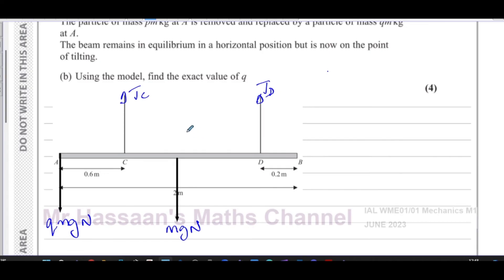Because there's been that change, the tension is no longer the same. You have here the tension in D and the tension in C. However, we know that it's on the point of tilting. So if you're adding a mass here, it's going to cause it to be tilting about C. If that mass got any bigger, it would tilt about C, meaning that it would lift off from D.